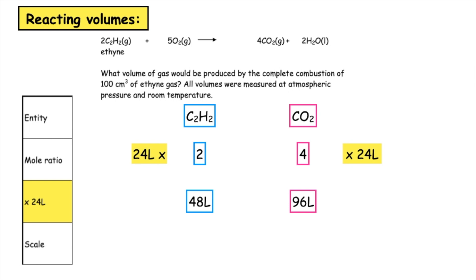In the question, we've been given 100 centimetres cubed of ethine gas. We convert that into litres which is 0.1 litres and then we cross multiply. 96 times 0.1 divided by 48 gives us 0.2 litres.